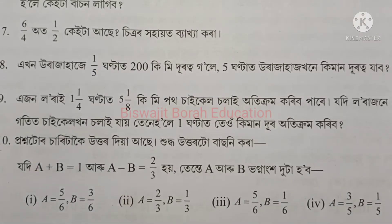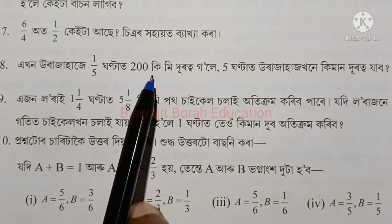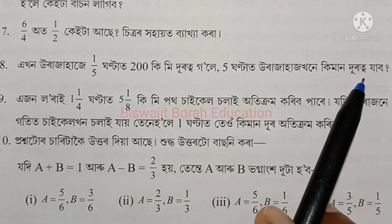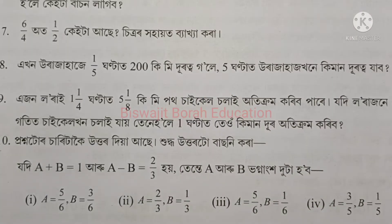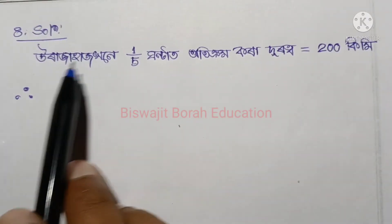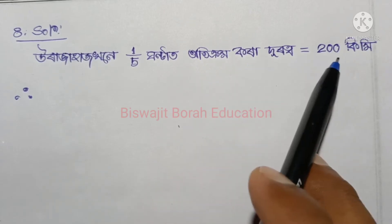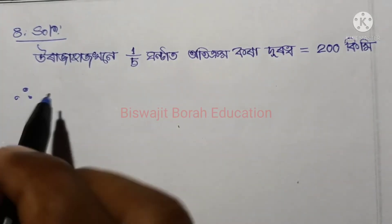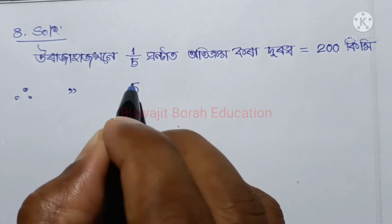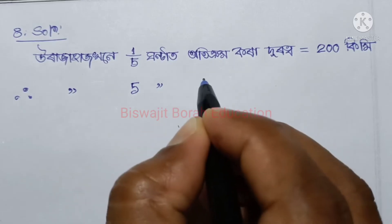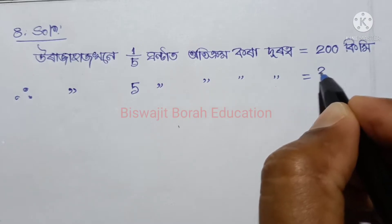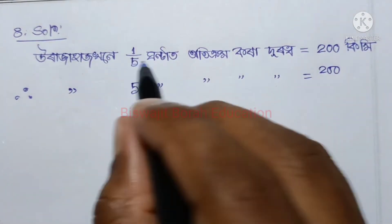In 5 hours, the plane (ura jahas) crosses a distance. At a speed of 200 km per hour, crossing in 5 hours means the total distance covered. We need to find how many kilometers are covered: 200 km times 1/5 gives us the answer.